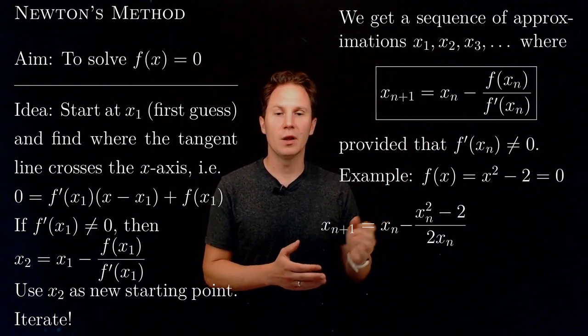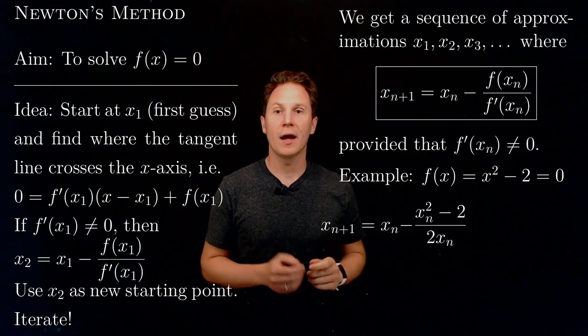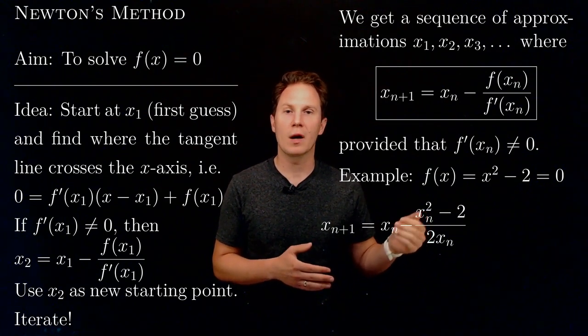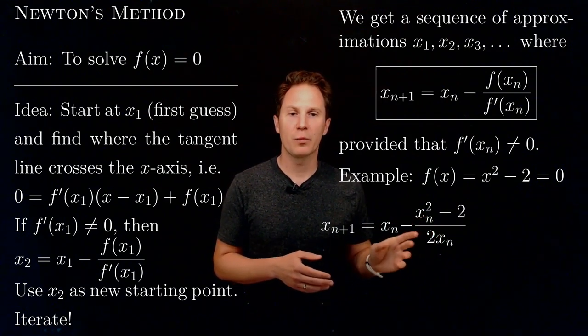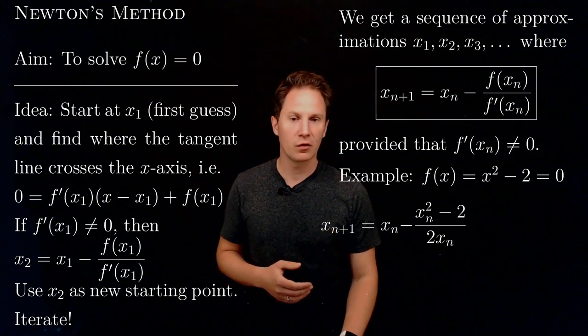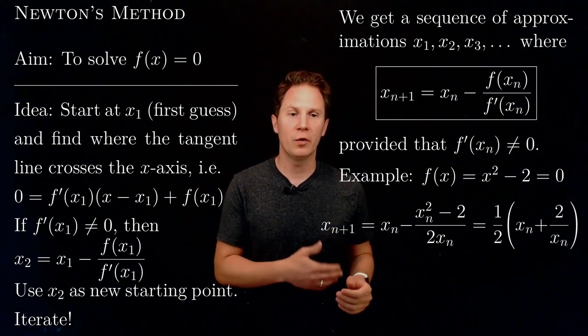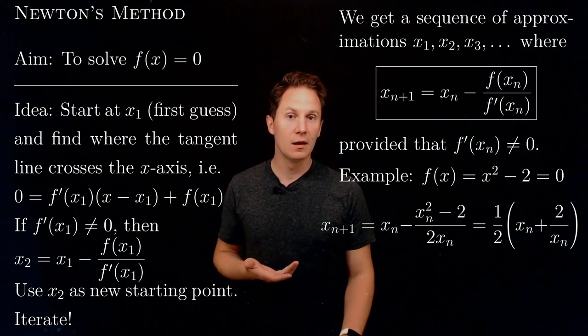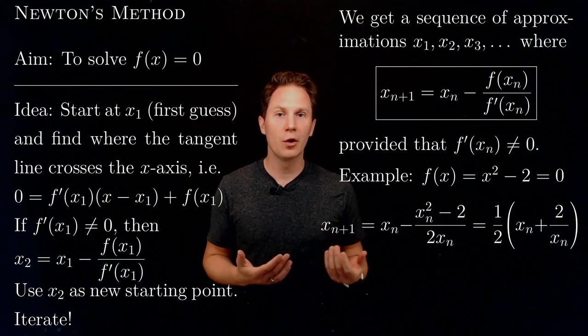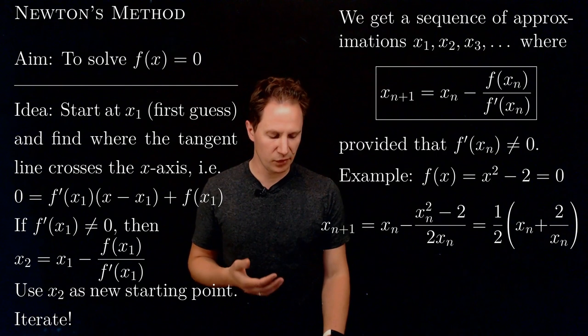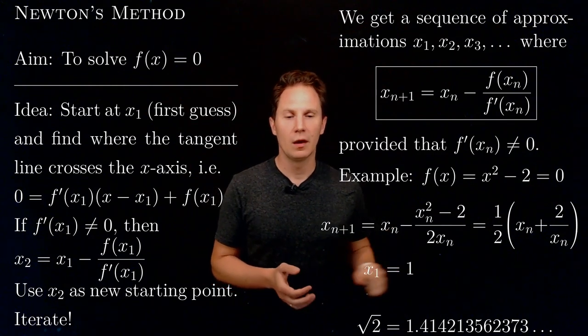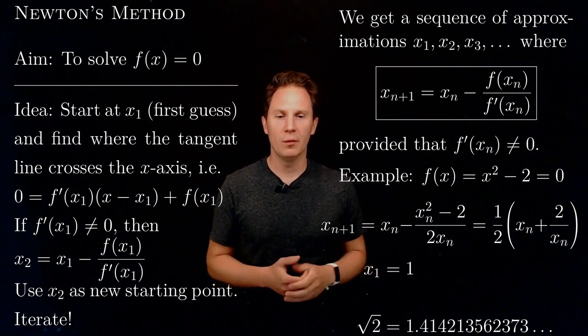If we simply apply the formula, then we get xₙ₊₁ = xₙ - f(xₙ), that is xₙ² - 2, divided by f'(xₙ), which is 2xₙ. Simplifying that expression gives us ½(xₙ + 2/xₙ), and then we just need to have an initial guess. Again, we are looking for root two, so I'll go with a really bad initial approximation of x₁ = 1, and here I give you the decimal expansion of root two up to some decimals.